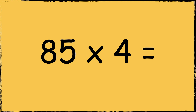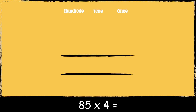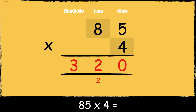Our next calculation is eighty-five times four. First we make sure the numbers are lined up accurately. The number eighty-five has five ones and it has eight tens. The number four has four ones. So now that we're set up, we're ready to multiply. First we're going to multiply four by five: four times five is twenty. We carry the two below in the tens column as it represents two tens. Next we multiply four by eight tens: four times eight is thirty-two.